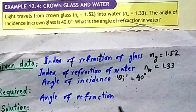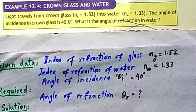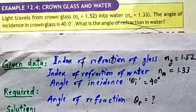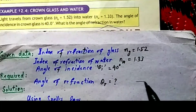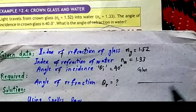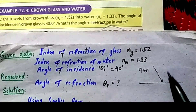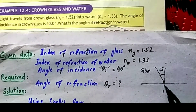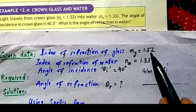We need to find angle of refraction theta_R. The required quantity is: what is the angle of refraction in water? From the diagram, light comes in and hits the normal at 40 degrees, making an angle of incidence of 40 degrees, then reflects and refracts.